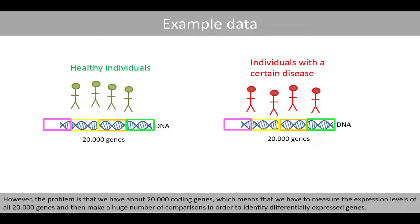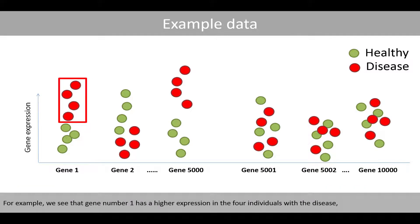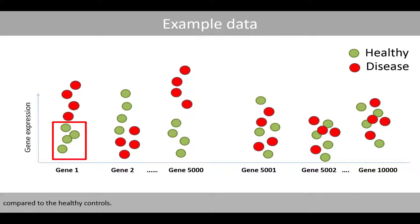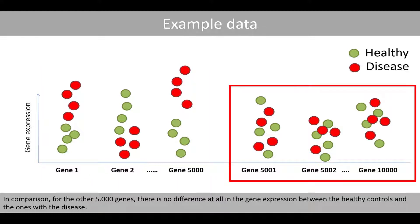The problem is that we have about 20,000 coding genes, which means we have to measure the expression levels of all 20,000 genes and then make a huge number of comparisons to identify differentially expressed genes. Suppose we have analyzed the expression of 10,000 genes. We see that 5,000 out of the 10,000 genes have different expression levels, meaning there is a true difference in gene expression between the disease group and the healthy controls in these 5,000 genes. For the other 5,000 genes, there is no difference at all in gene expression between the two groups.